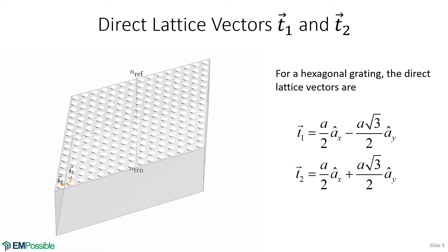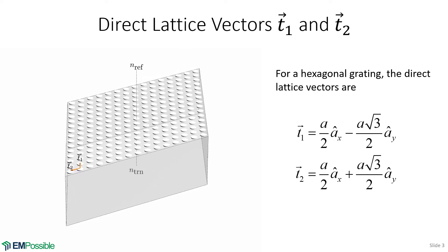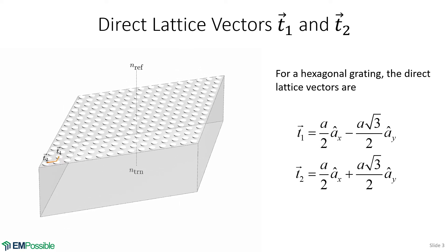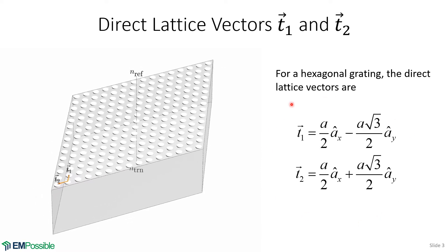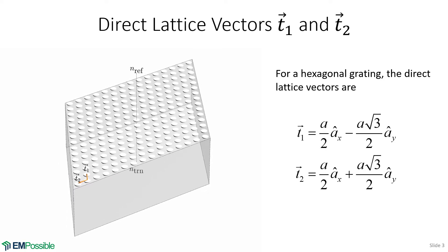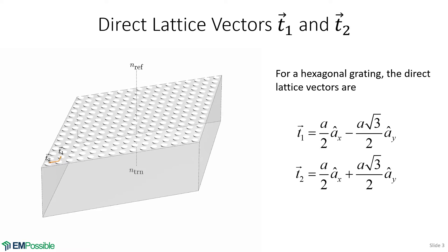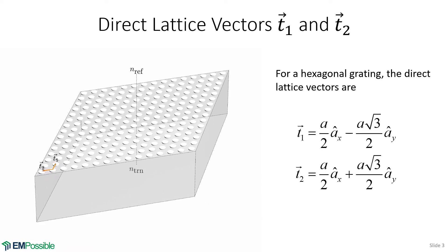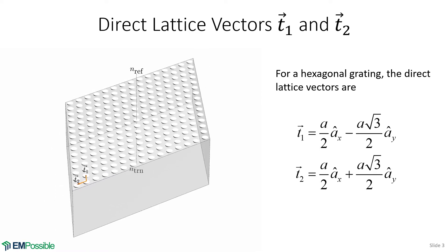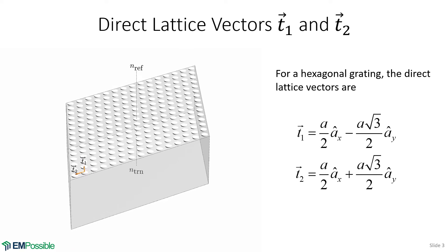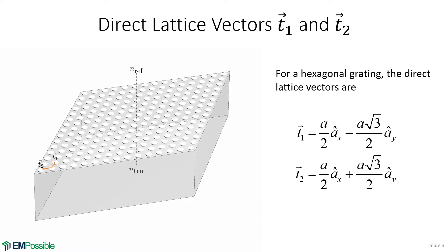Somewhere at the start of this analysis, we have to define the direct lattice vectors of the grating. Since this is a hexagonal array, this is how we will define our two direct lattice vectors for the hexagonal array. If you had a square array or something other than a hexagon, we would have to change these direct lattice vectors. Don't mistake these for the reciprocal lattice vectors — those are things we will calculate in a little bit. We use these direct lattice vectors to describe the symmetry of the grating in the plane of the grating.